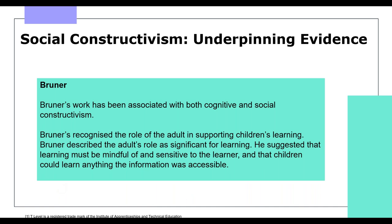Bruner's work has been associated with both cognitive and social constructivism. There is an activity sheet focusing on Bruner's three modes of representation. In the cognitive constructivist view, Bruner was suggesting stages of learning. He also considered the social impact of learning, which is associated with social constructivism theory. Bruner recognised the role of the adult in supporting children's learning, suggesting that learning must be mindful and sensitive to the learner, and that children could learn anything if the information was accessible.